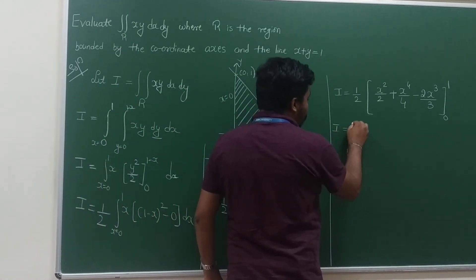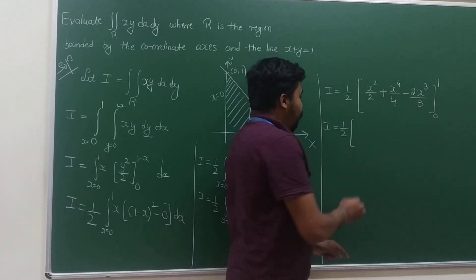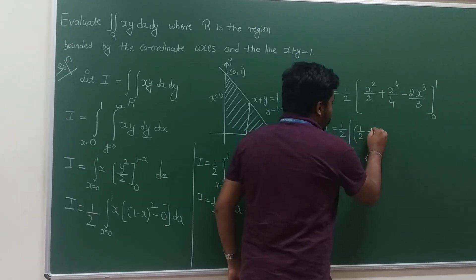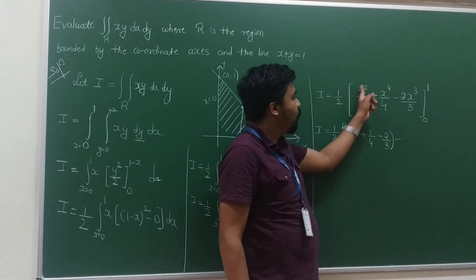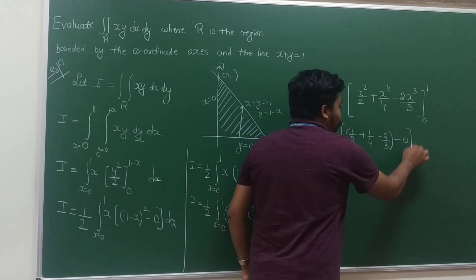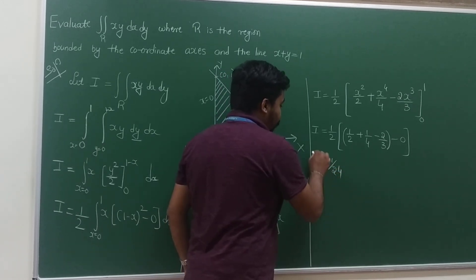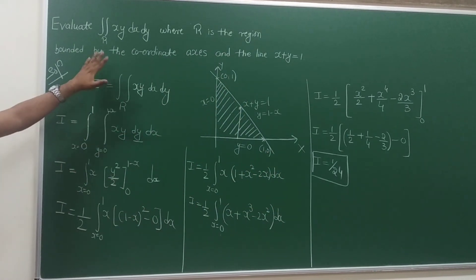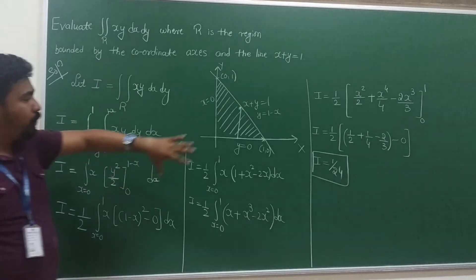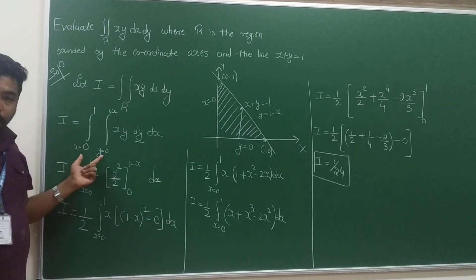Therefore I = (1/2) · (1/2 + 1/4 − 2/3). Applying the lower limit x=0 gives 0. Simplifying: (1/2) · (1/2 + 1/4 − 2/3) = 1/24. So this is the final answer. The key takeaway, my students, is that you should know the basic geometry of line equations, parabola equations, and circle equations. Then you can easily draw the figure, identify the limits from the figure, and solve the problem. Thanks for watching my channel.